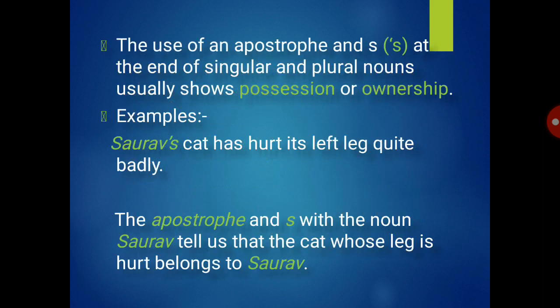The use of an apostrophe s at the end of a singular or plural noun usually shows possession or ownership. For example, 'Sora's cat has hurt its left leg quite badly.' The apostrophe s with the noun Sora tells us that the cat whose leg is hurt belongs to Sora — so we say Sora's cat.